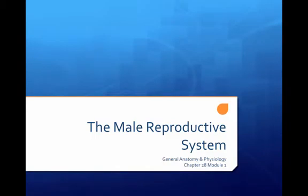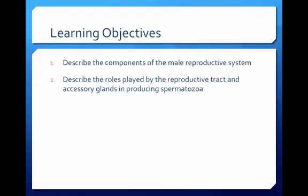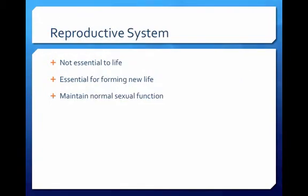This is Chapter 28, Module 1: The Male Reproductive System. The learning objectives for this module are to describe the components of the male reproductive system and to describe the roles played by the reproductive tract and accessory glands in producing spermatozoa.